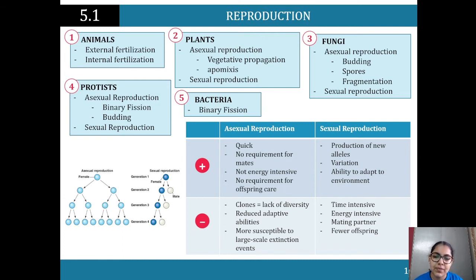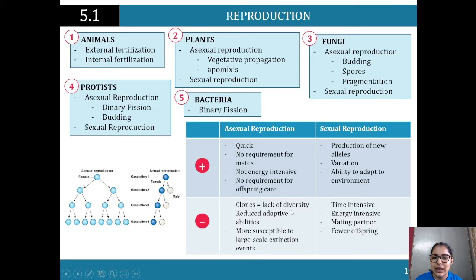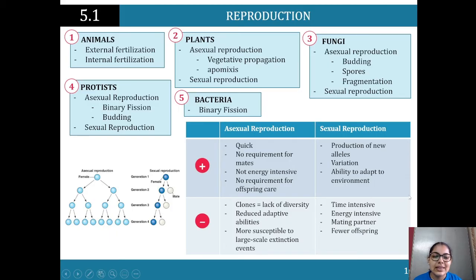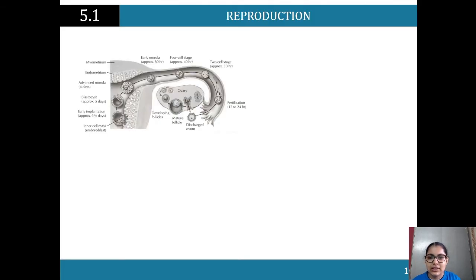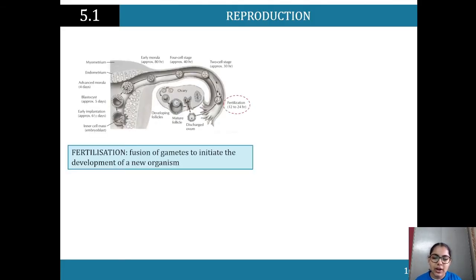Disadvantages of asexual reproduction include: offspring are clones, lacking diversity, with reduced adaptive abilities and increased susceptibility to large-scale extinction events. For sexual reproduction, the disadvantages are that it's time and energy intensive, requires a mating partner, and produces fewer offspring.